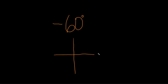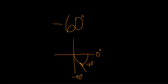So this is zero degrees, and this is a negative angle, so this would be negative 90 down here. That means negative 60 would be maybe somewhere over here like this. So this is our angle, negative 60 degrees, and this would be the terminal side here.